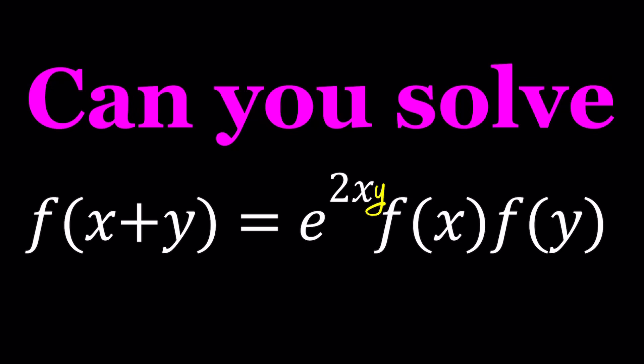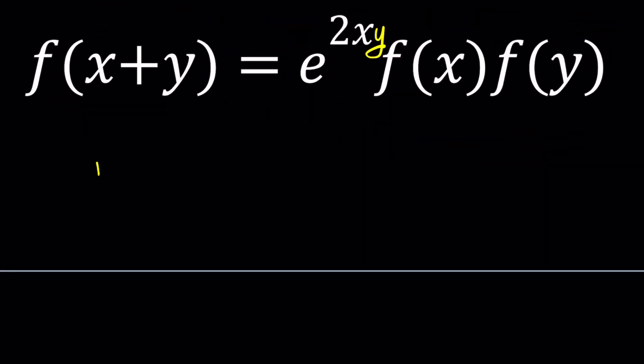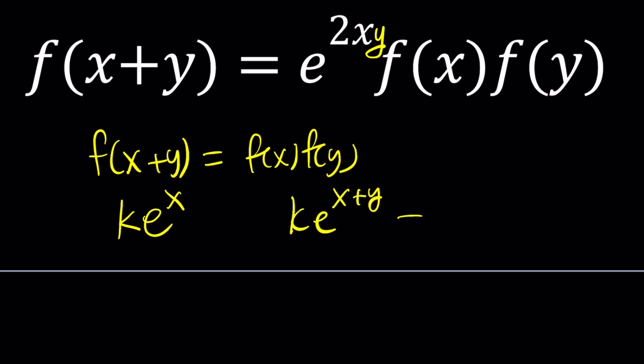Notice that we have an exponential function in the equation. If we didn't have that, we would have a much simpler equation like f of x plus y equals f of x times f of y. And the solution to this equation is actually an exponential function, like e to the power x. But k times e to the x is not going to satisfy, because if you plug it in, k e to the x plus y is not equal to k e to the x times k e to the y, unless k is 1 or 0. This is one of Cauchy's function equations without the exponential piece.